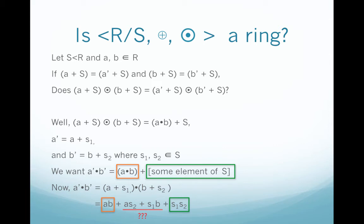Going back to the problem we had before, now we can see that if S is an ideal, then A·s₂ must be in S and s₁·B must be in S. And since S is closed under addition, we know that those three terms are an element in S, and now we have AB plus some element in S.